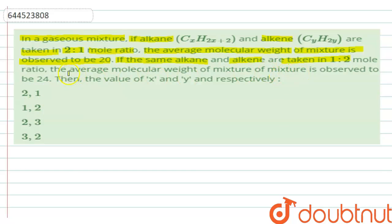If the same alkane and alkene are taken in the ratio of 1:2 mole ratio, the average molecular weight of the mixture is observed to be 24. Now they are asking the value of x and y respectively, and we have been provided here with four options and we need to find out the correct one.